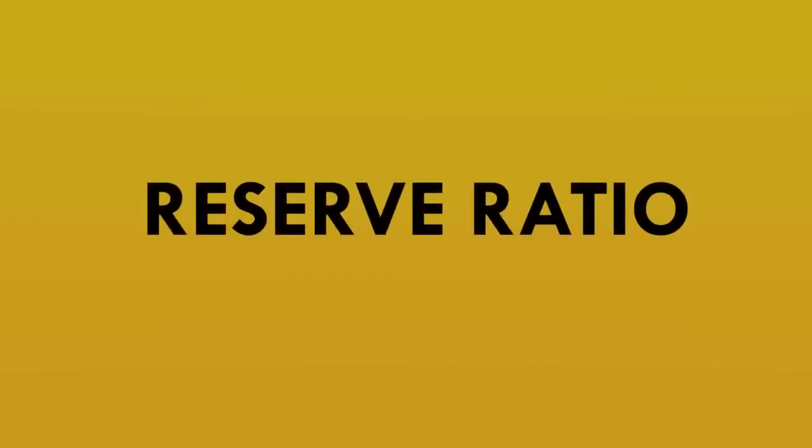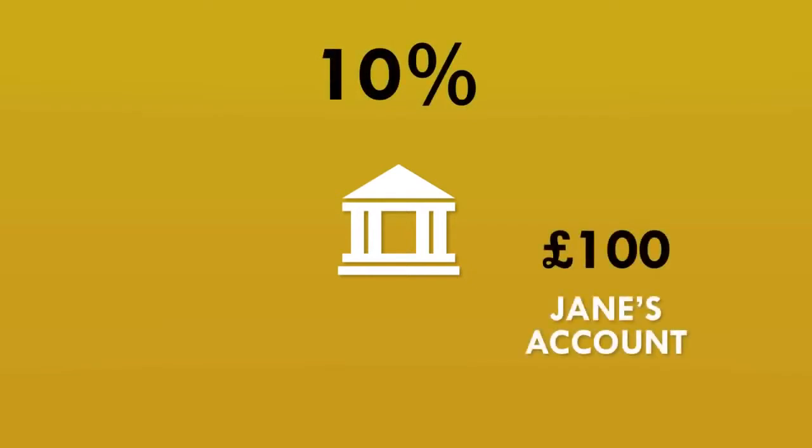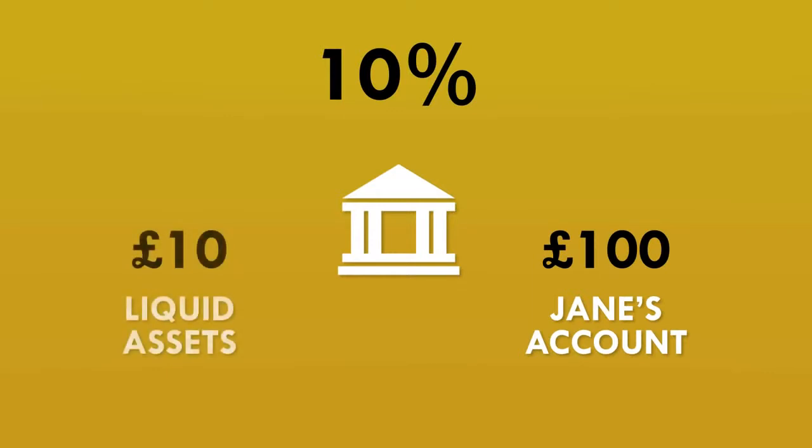But this is almost never what happens. When there was a reserve ratio in the UK, it was what was called a liquidity ratio. A liquidity ratio is deceptively similar to a reserve ratio but fundamentally different. A liquidity ratio requires banks to hold liquid assets equal to a percentage of their deposits. So if a liquidity ratio was set at 10%, a bank with 100 pounds in a customer's account would need to hold 10 pounds of liquid assets. You're probably thinking: what's the difference? Well, the key point is the term 'liquid assets.'